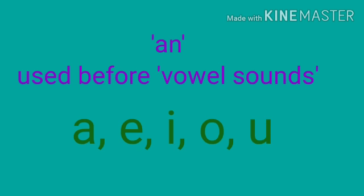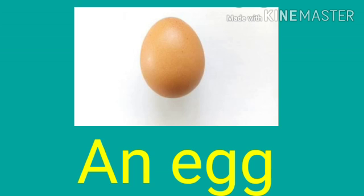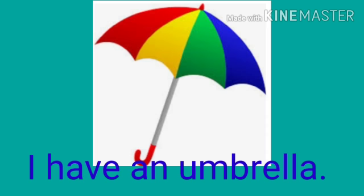Next, 'an' is used before vowel sounds in the alphabet. They are A, E, I, O, and U. Some examples are: it is an apple and egg, I have an umbrella.